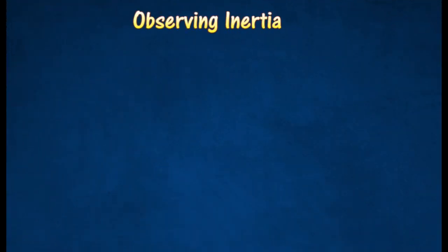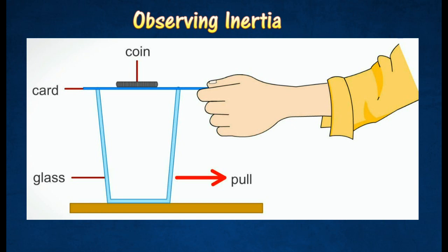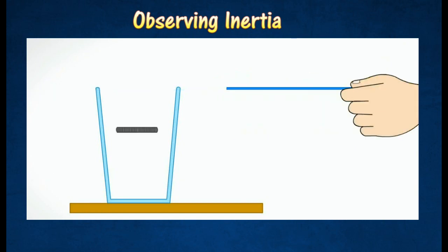Observing Inertia. A large coin is put on a piece of card and placed over a cup. If the card is flicked sharply, the coin will fall straight into the cup.